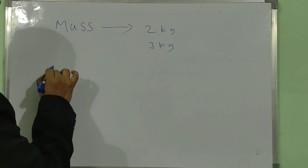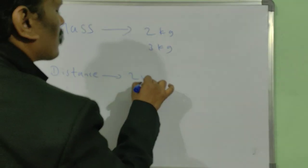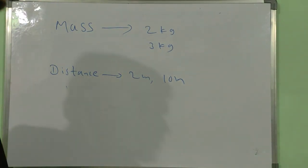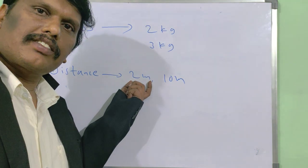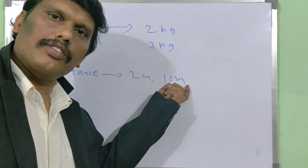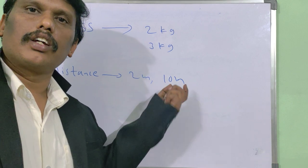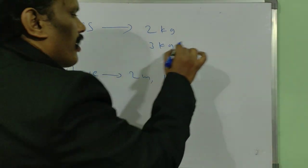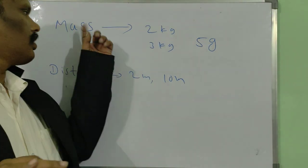Suppose I consider distance — 2 meters or 10 meters. That is enough to know the complete information about the distance. Similarly, for mass — 2 kg, 3 kg, or 5 grams — that is enough to understand the mass. These quantities require only a magnitude.